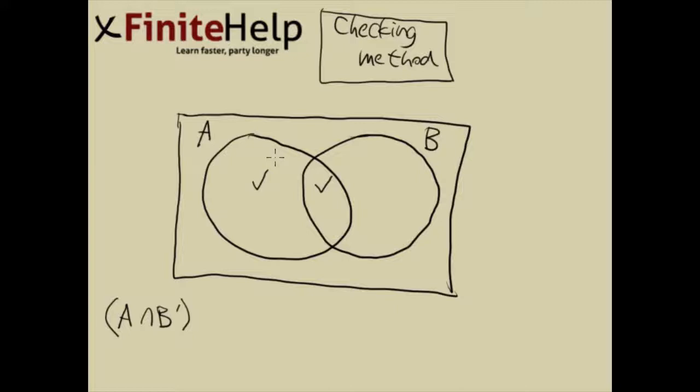So these are the areas that are included in A. And then now I'm going to look at the area on the right, which is B prime. B prime would be everything that's not in this B circle, which is going to be this area and the area outside.